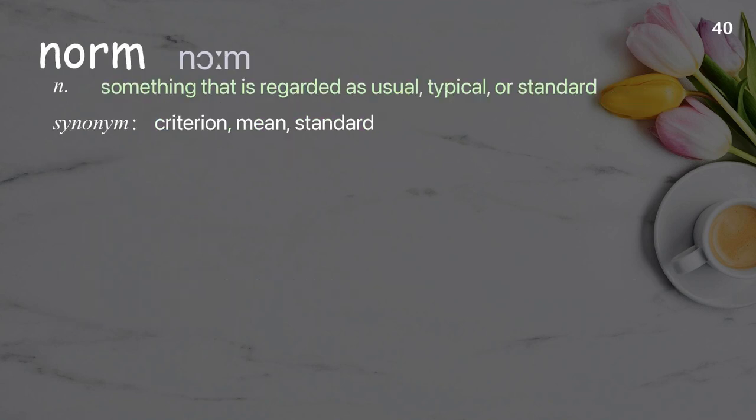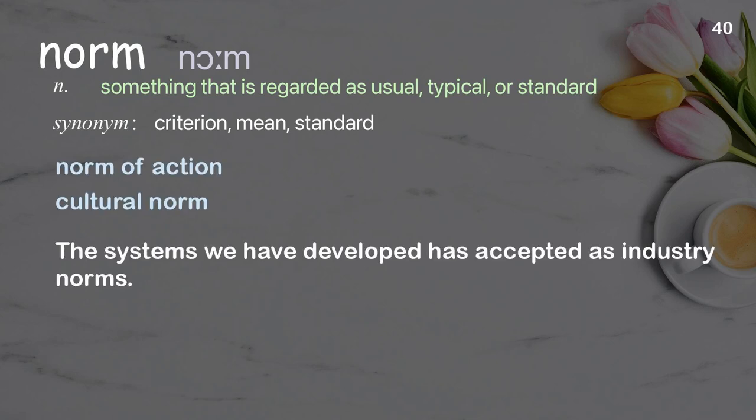Norm: Something that is regarded as usual, typical, or standard. Examples: Norm of action. Cultural norm. The systems we have developed have been accepted as industry norms.